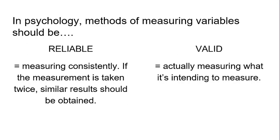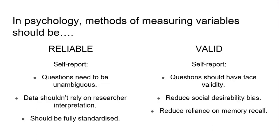Thinking about validity, that simply means that something is measuring what it's supposed to measure. We often use that as a definition of internal validity — is it designed in a way that it's actually measuring what we want it to measure? If we've got a questionnaire about stress and it's actually measuring sadness or something else, then it's lacking validity. So let's look at how that applies to self-report measures such as interviews and questionnaires.